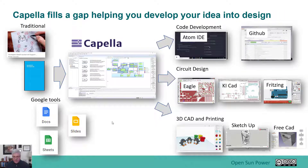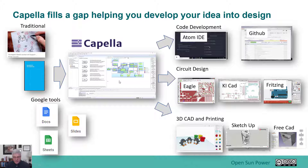So how does Capella work with other design tools? Capella fills a gap, helping you develop your idea into a design. It bridges from a traditional napkin sketch, to a notebook where you detail ideas, or even electronic forms like Google Docs, Sheets, and Slides. It takes that information and puts it into a more formal way of communicating it. Using the Arcadia method embedded inside the tool, you can create a representation that can be communicated to downstream development activities.